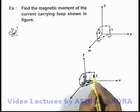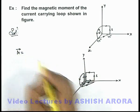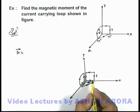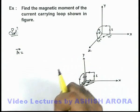For this loop which is having a magnetic moment i multiplied by r square, you can see its magnetic moment is in the direction of the z-axis.